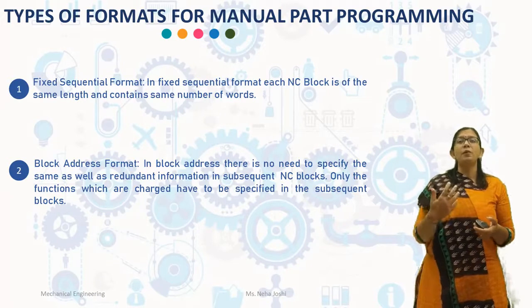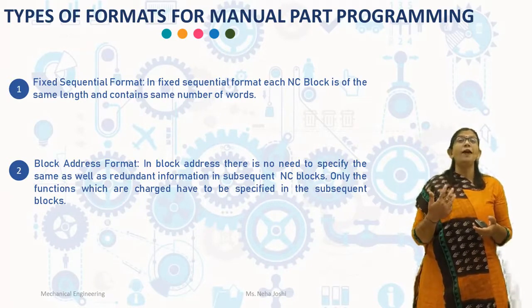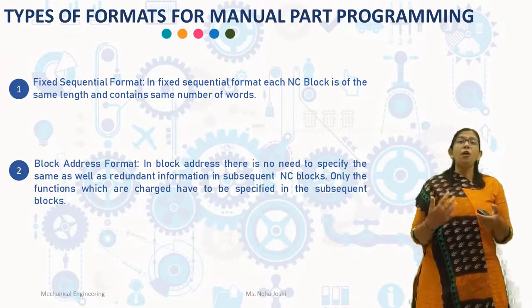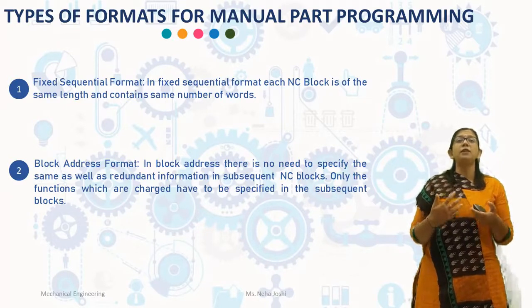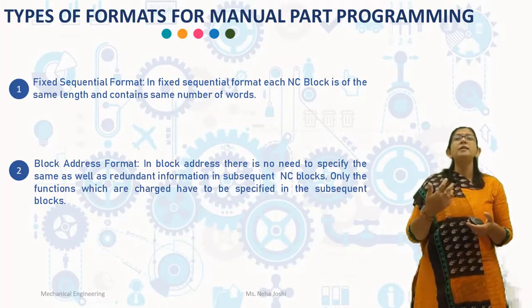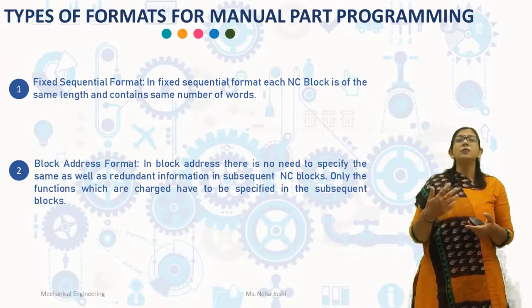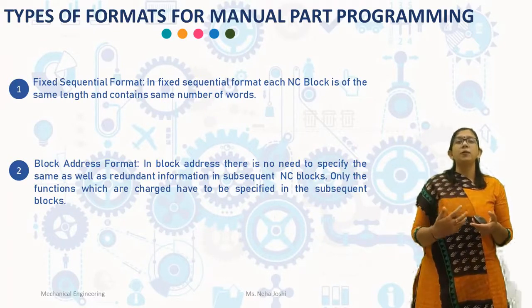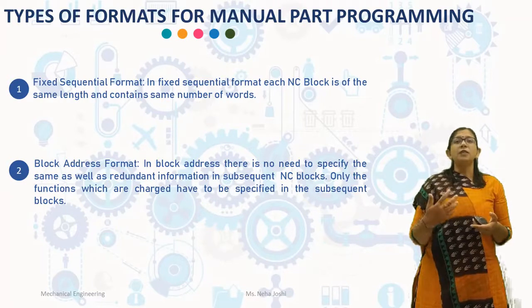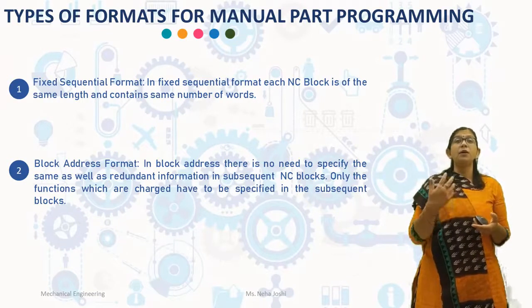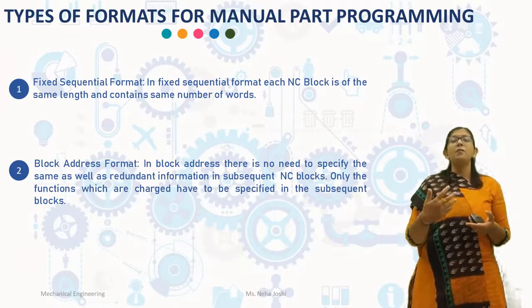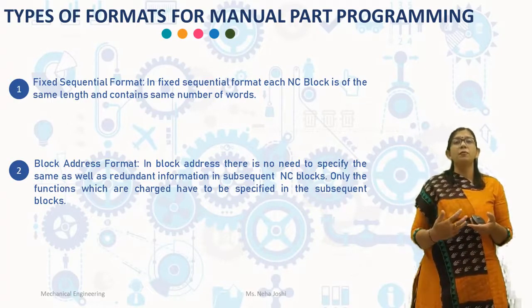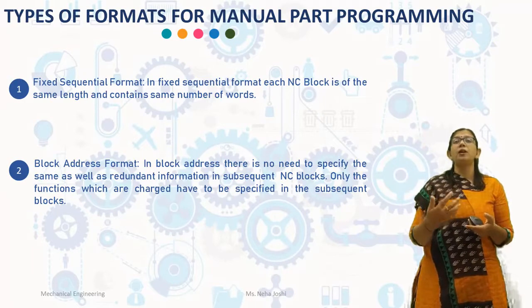The next type of format is block address format. In the block address format, there is no need to specify the same or redundant information in subsequent NC blocks. Only the functions which have changed need to be specified in subsequent blocks. For example, once a feed rate is programmed in a block, it remains fixed in all subsequent blocks until it is replaced by another feed value.